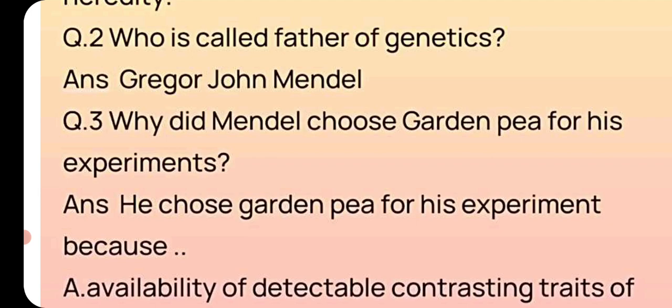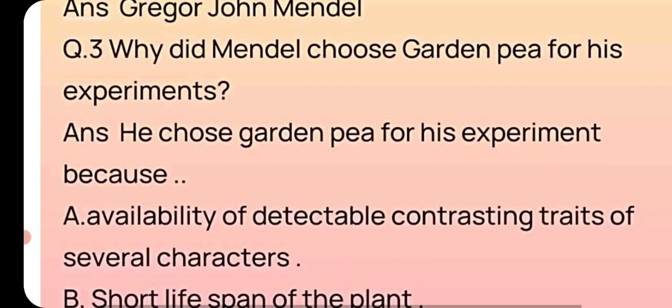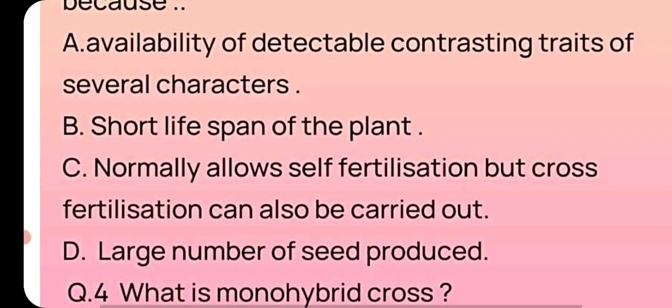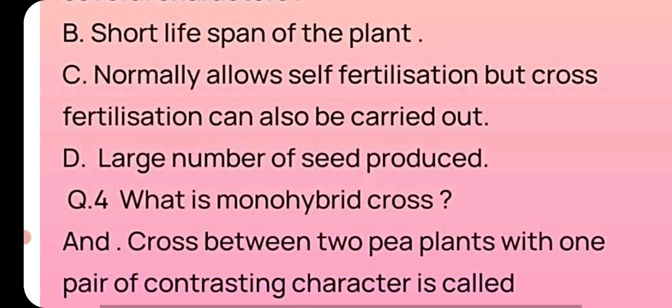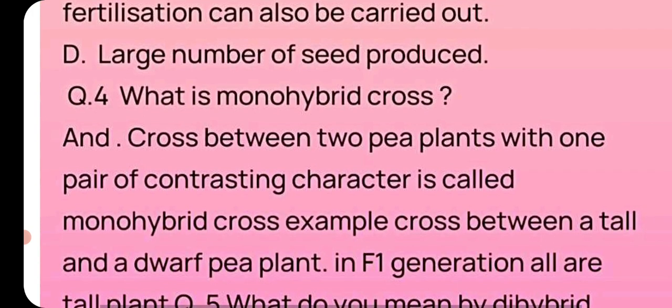Question number three: Why did Mendel choose garden pea for his experiments? He chose garden pea because of the availability of detectable contrasting traits of several characters, short life span of the plant, it normally allows self-fertilization but cross-fertilization can also be carried out, and a large number of seeds are produced.